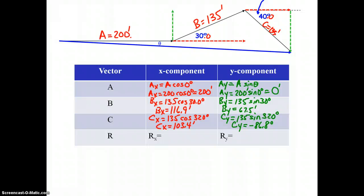Alright, now what do we do next? Rx is simply the sum of Ax plus Bx plus Cx. When we add those three x components together, we get a value of 420.3 feet. Think about it. You're taking A, which is 200, adding it to B's x component which was 116.9, and adding to C's x component to get the x component of the resultant itself. This would be the x component of the resultant.